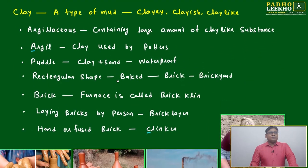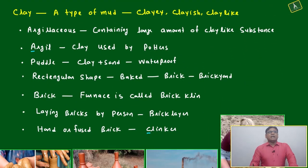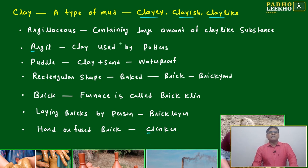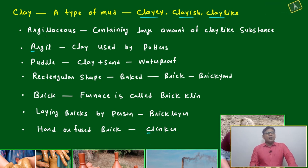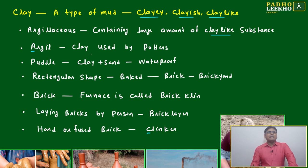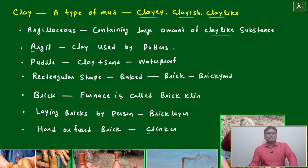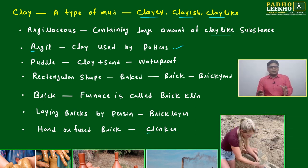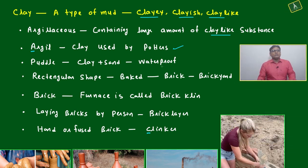Now we'll come to the word clay. Clay is a type of mud. The word argilaceous means containing a large amount of clay-like substance. Argil is a clay used by potters — whatever clay potters will use, that is called argil.